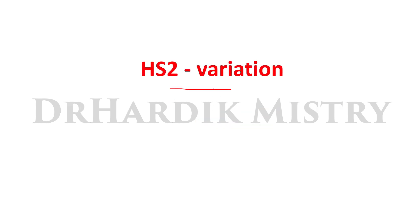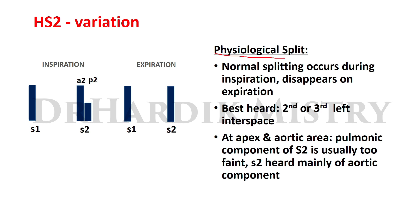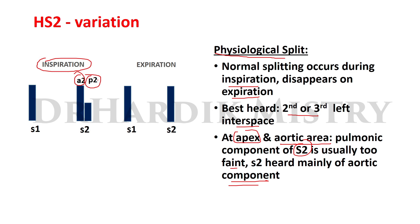Heart sound two variations — physiological splitting of the second heart sound: normal splitting occurs during inspiration and disappears on expiration. The second heart sound has an aortic component (A2) and a pulmonary component (P2). Normal splitting is best heard in the second and third left intercostal spaces. At the apex and aortic area, the pulmonary component P2 is usually too faint to hear, so S2 heard there is mainly the aortic component A2 only.